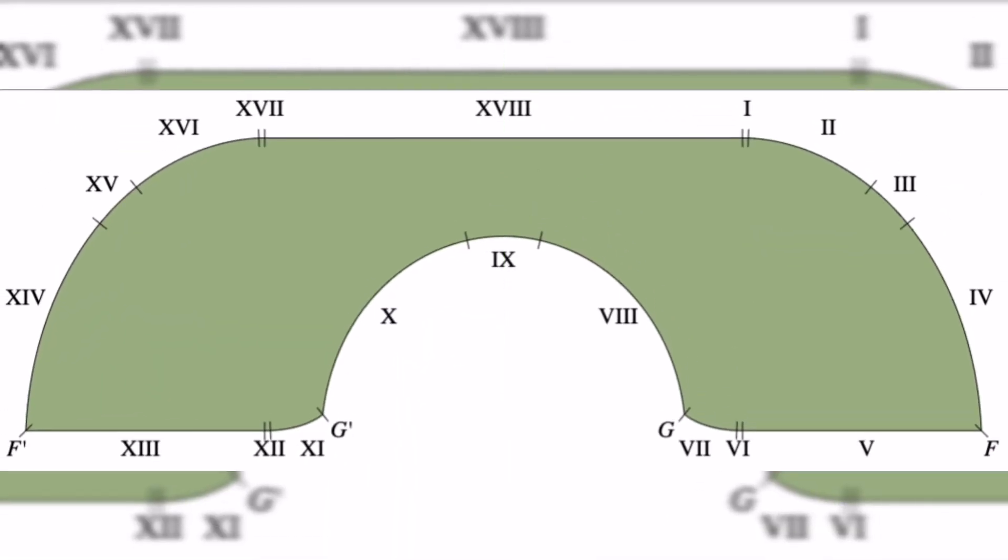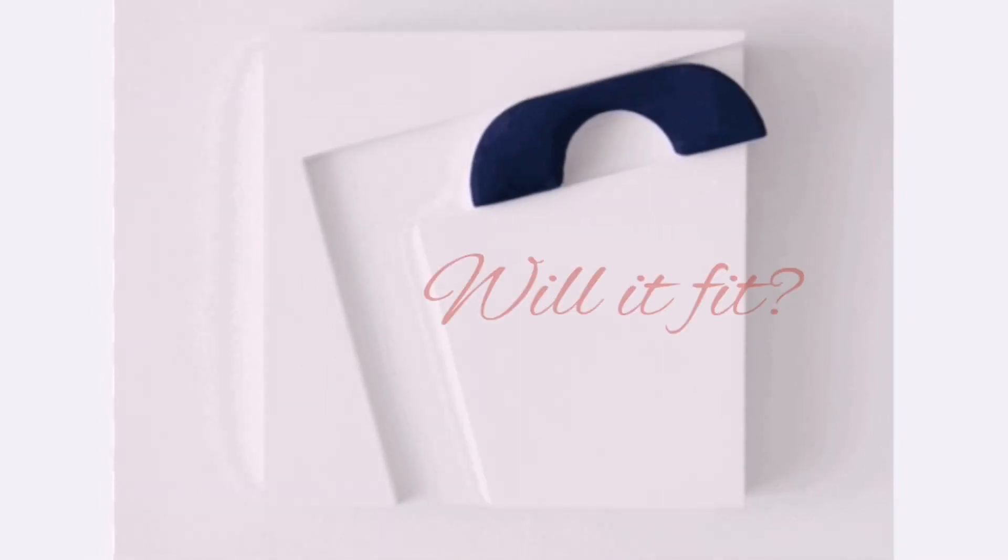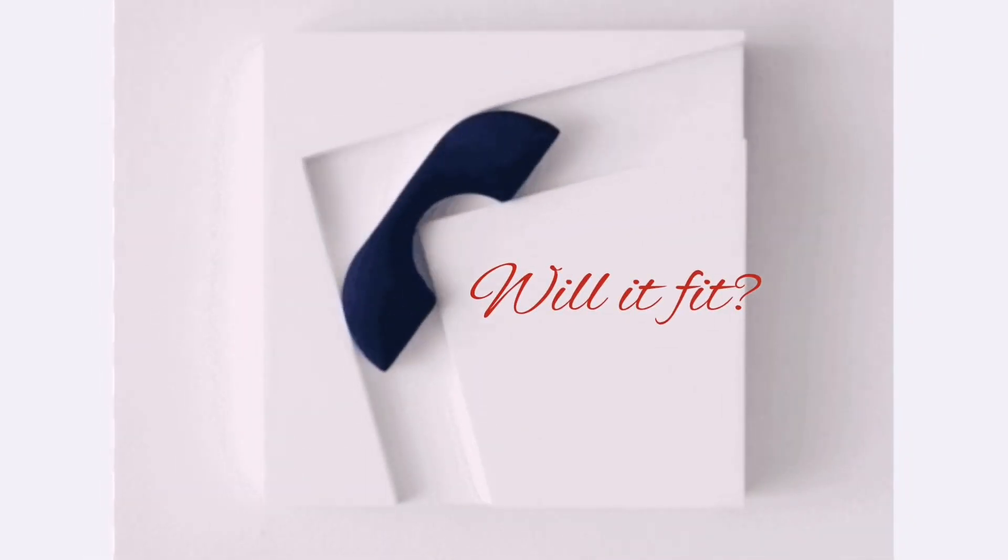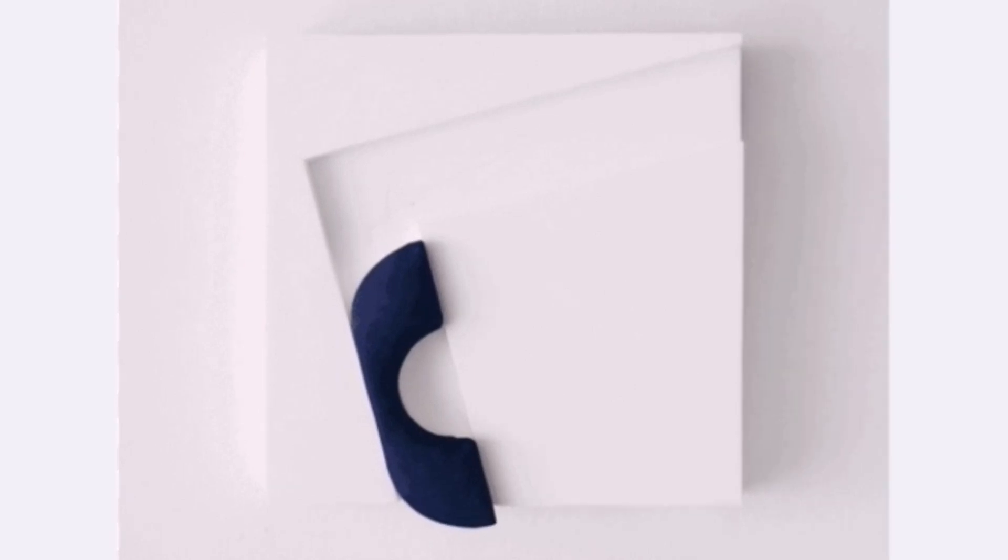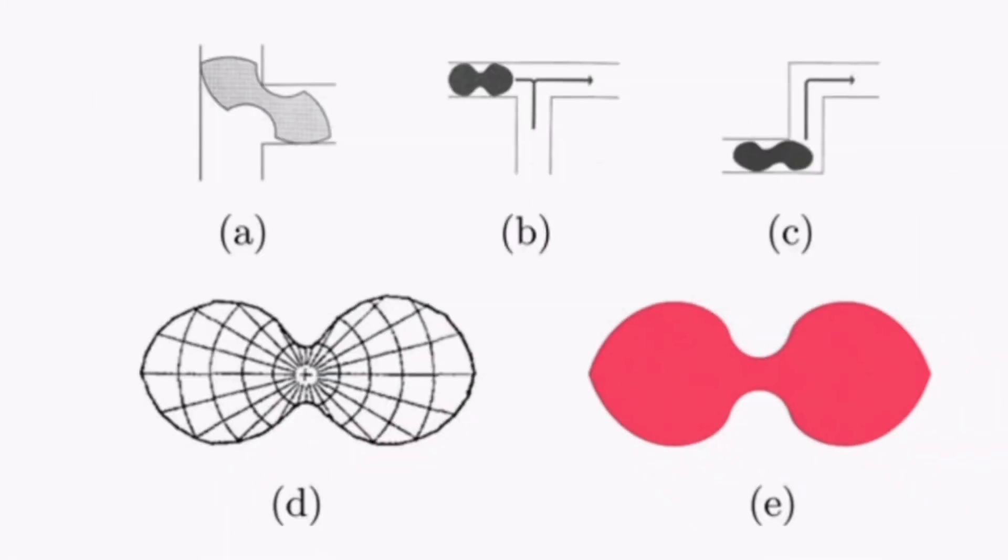For example, a semicircle with radius of 1 can be moved around an L-shaped hallway. This sofa has an area of pi/2, but larger areas are possible.